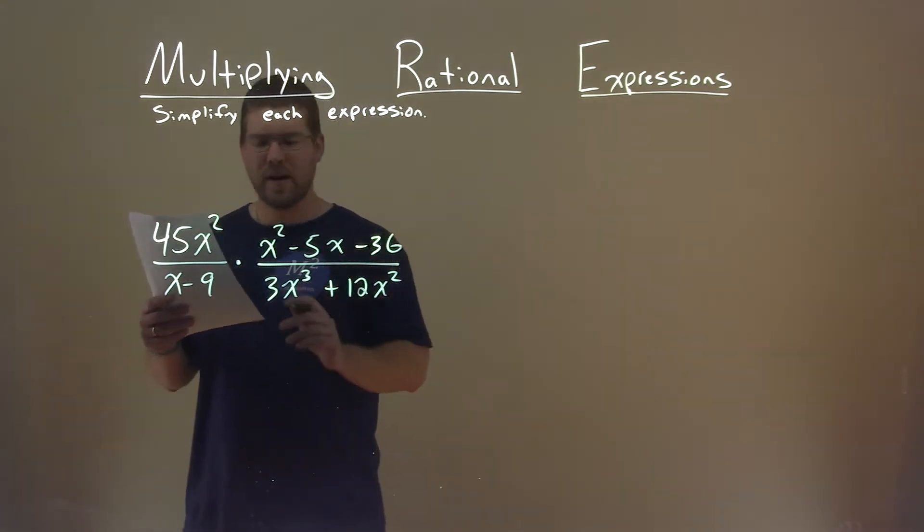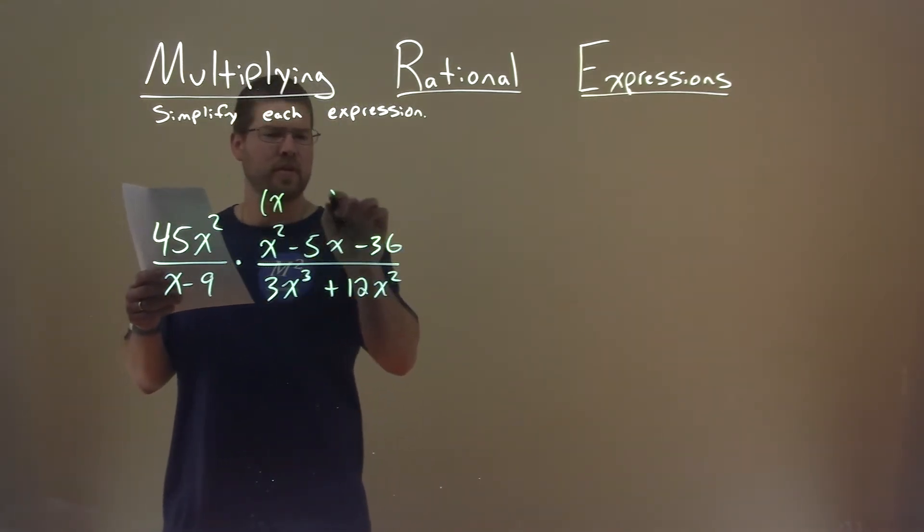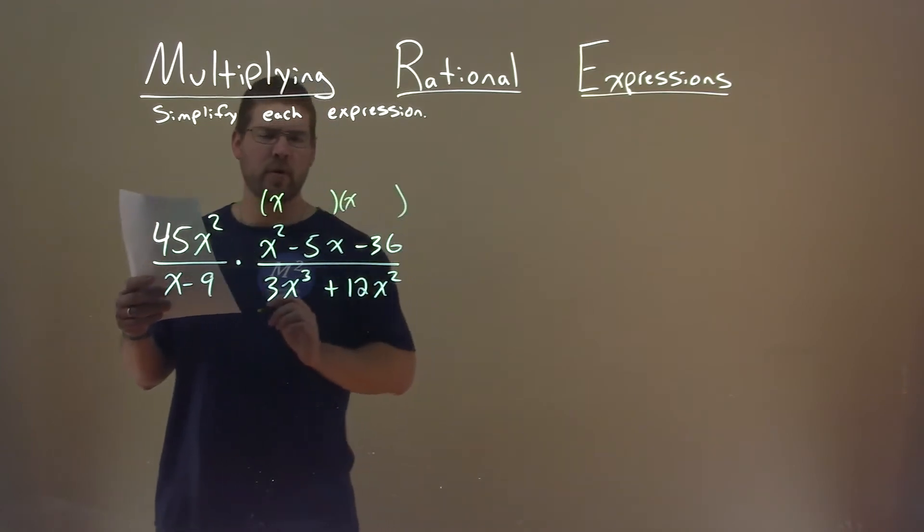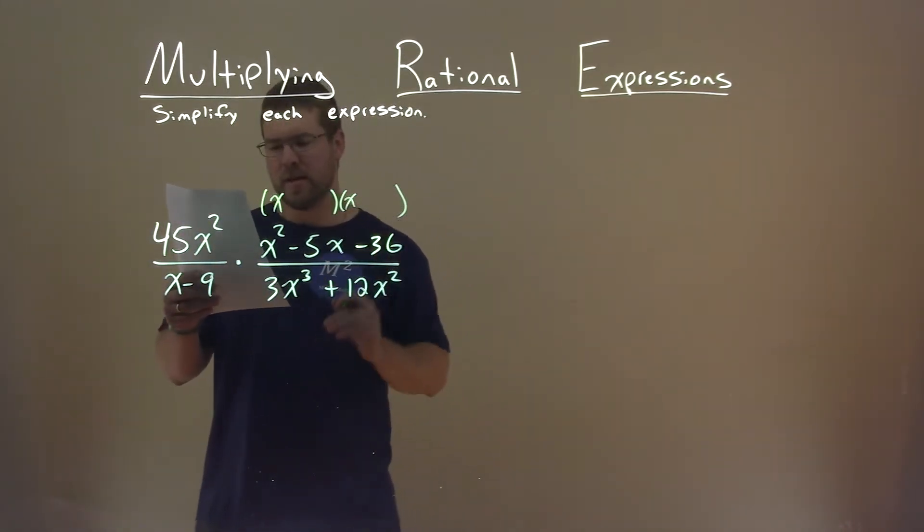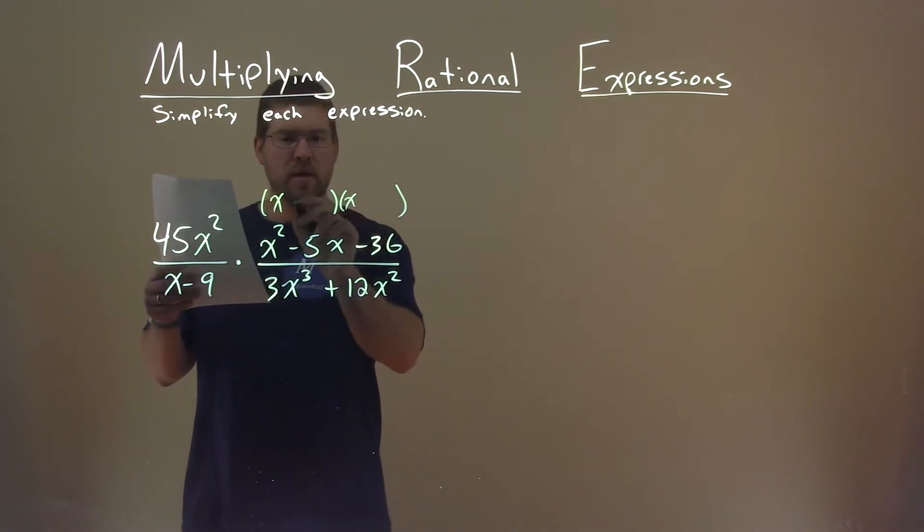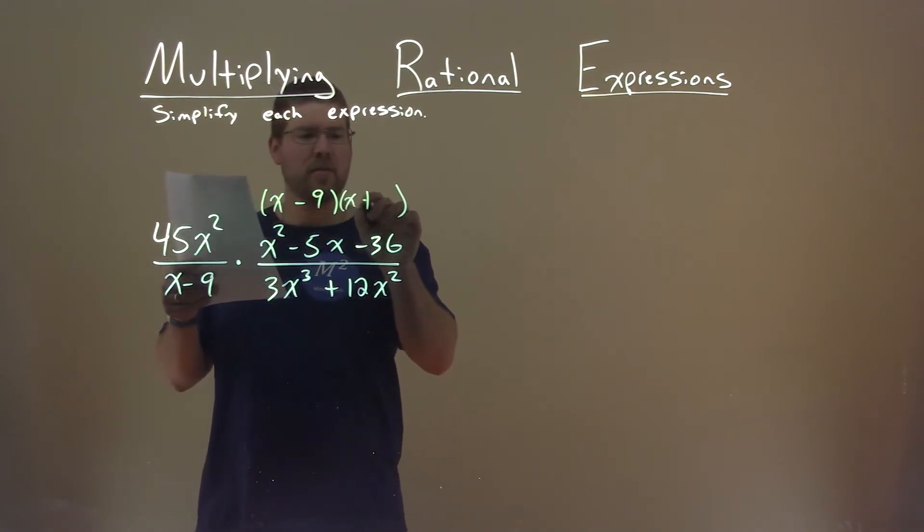Well, this numerator right here, I can see factors fairly easily. So we set up our form, and what two numbers multiply by negative 36 but add to be negative 5? That's a negative 9 and a positive 4.